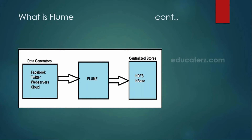The data generators are where exactly your data is generating from — it may be a Facebook post, Twitter tweets, web server logs, or any cloud source. With the help of the Flume ecosystem component, you are loading that into your centralized stores such as the Hadoop Distributed File System or even HBase as a NoSQL database as well.